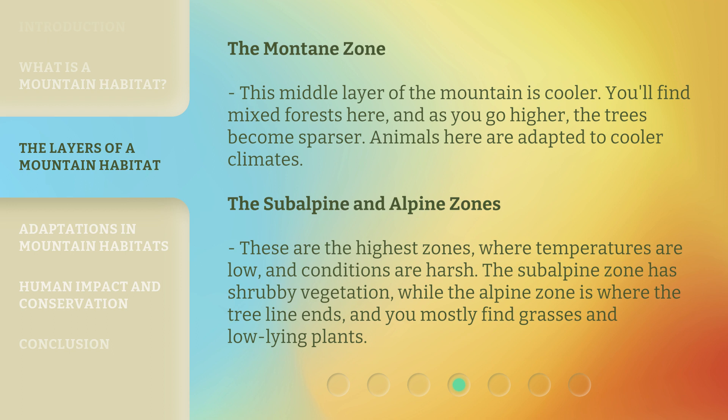The subalpine and alpine zones are the highest zones, where temperatures are low and conditions are harsh. The subalpine zone has shrubby vegetation, while the alpine zone is where the tree line ends, and you mostly find grasses and low-lying plants.